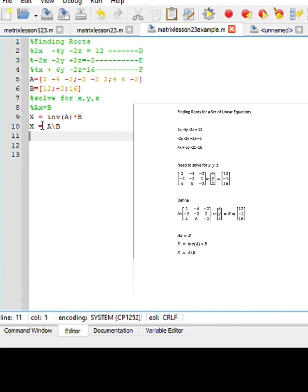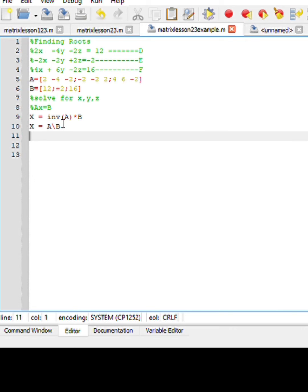I can either use option 1: X equals inv(A) times B, or X equals A slash B.